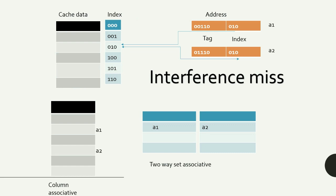Here is what a conflict or interference miss is about: when two addresses have two different tags but the same index, each address maps to the same cache block in a direct map cache. Direct map caches cannot handle these interference misses. In a two-way set associative cache, since each set has two cache blocks, one address resides in one location and the other resides in the second location within the same set.